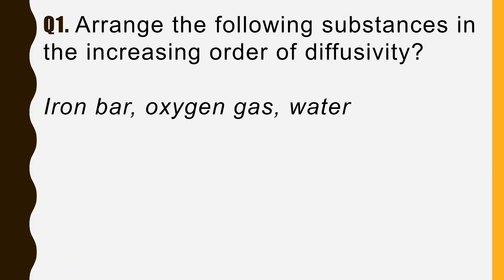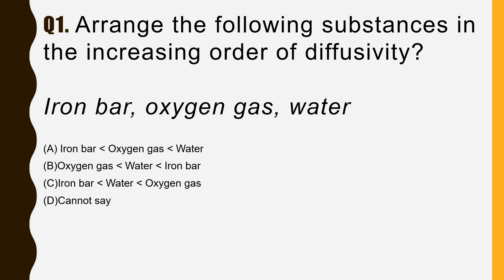The first question is: arrange the following substances in the increasing order of diffusivity. The substances are iron bar, oxygen gas, and water. The options are: A) iron bar < oxygen gas < water; B) oxygen gas < water < iron bar; C) iron bar < water < oxygen gas; and D) cannot say.